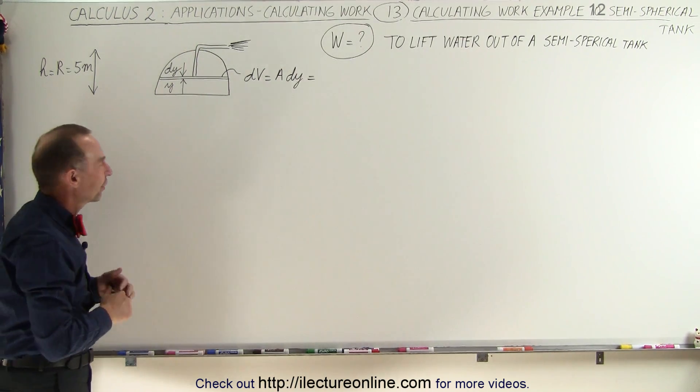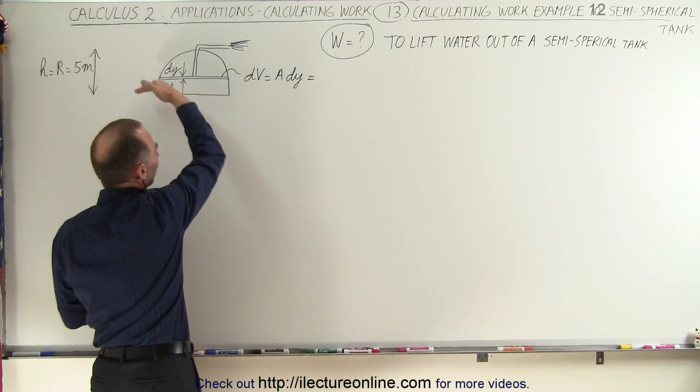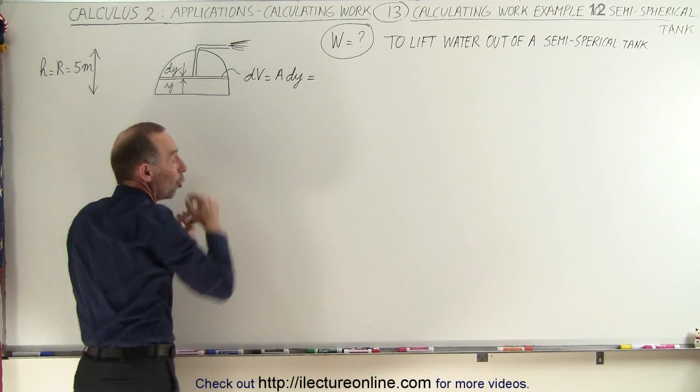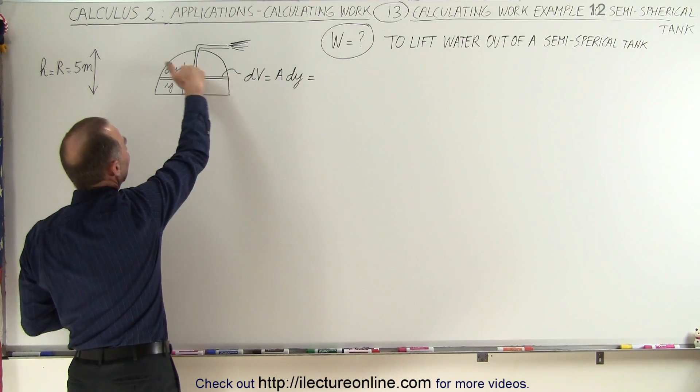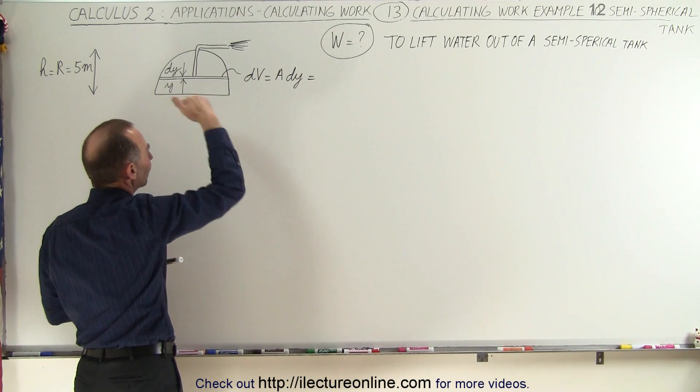It's a semi-spherical tank. So the dV, the small volume, is going to be like a flat little washer, well it's not really a washer because there's no opening, so a small little slice. dV is going to be the area times the height dy, and the area would be the area of the circle.